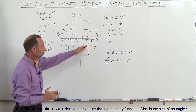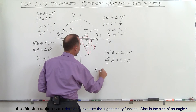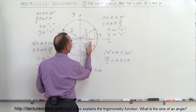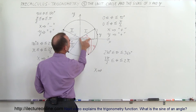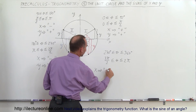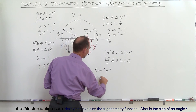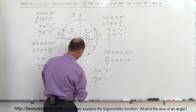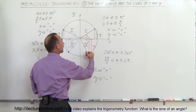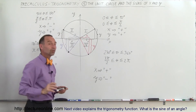Now in the fourth quadrant, we can see that the x-value is back into the positive realm because we're to the right of the y-axis, so x is a positive value. But y is still a negative value because we're below the x-axis, so this is a negative value for y.